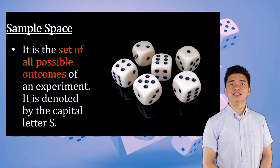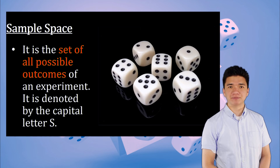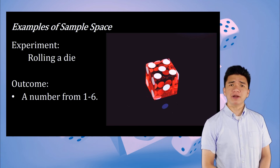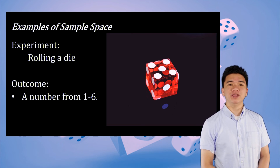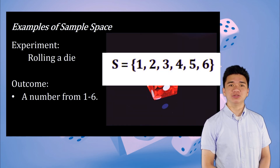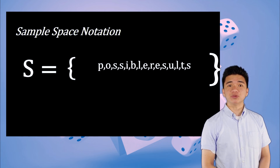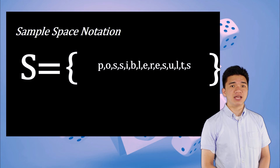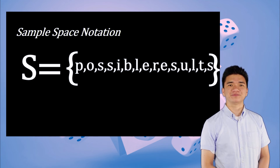Sample space is the set of all possible outcomes of an experiment, denoted by the capital letter S. For example, for the experiment of rolling a die, the outcome would be a number from 1 to 6. The sample space is S = {1, 2, 3, 4, 5, 6}. To write the sample space correctly, start with capital S, followed by an equal sign, then curly braces with a comma between each possible result.